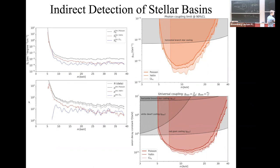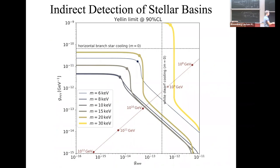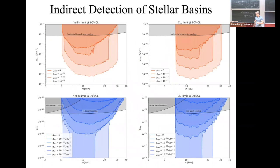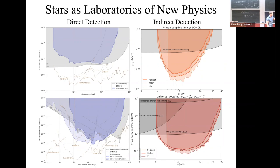On the left I'm showing our new direct detection constraints and on the right the indirect detection constraints from the decays of axions. I think these stellar basins in general will be the leading probe of keV mass particles and a few orders of magnitude around it in the next few years. Thank you.